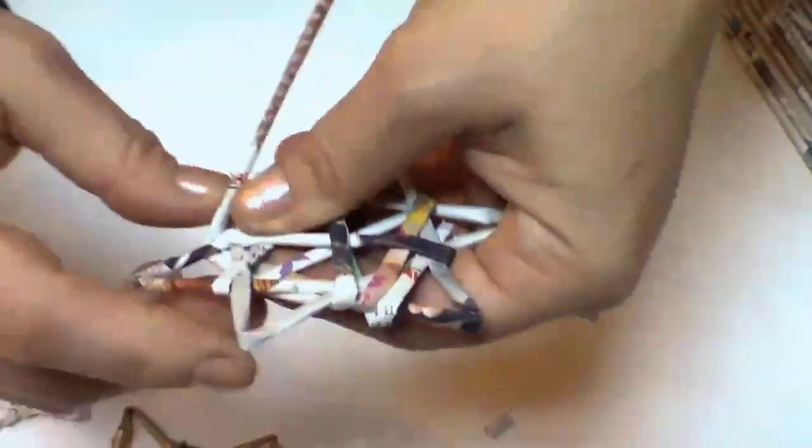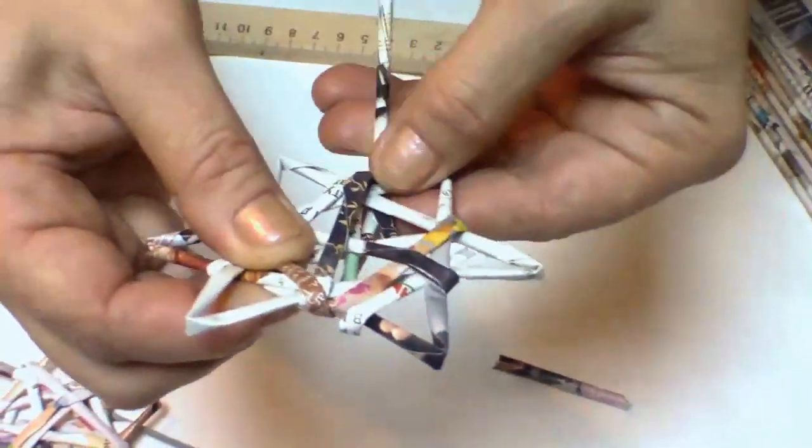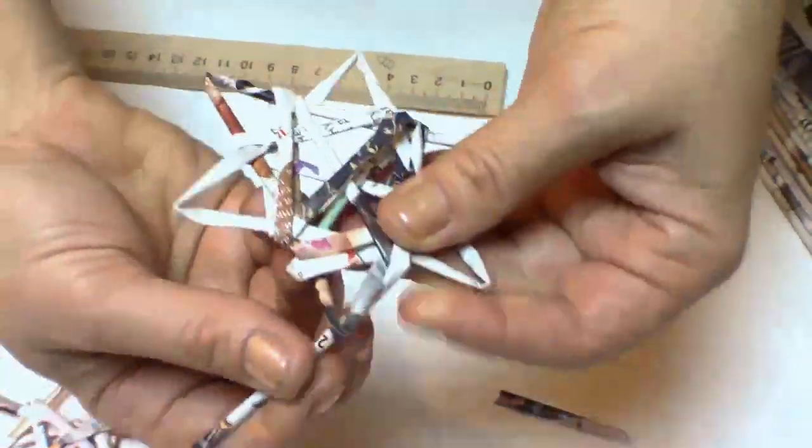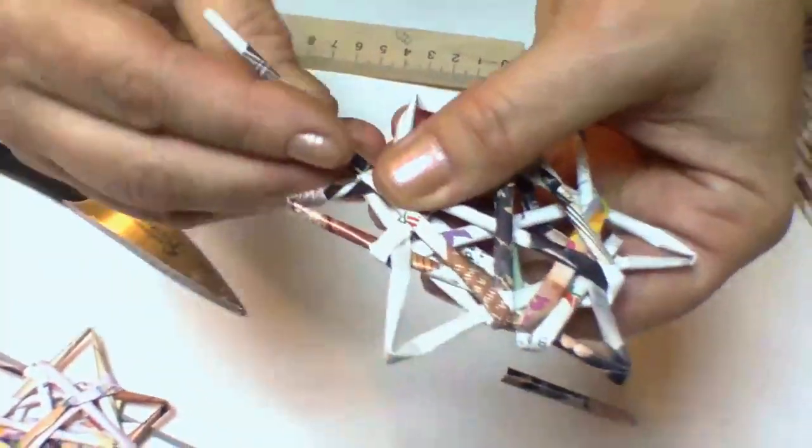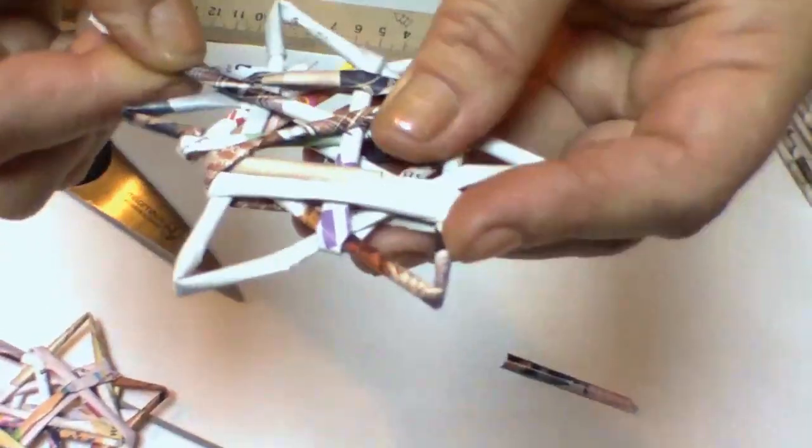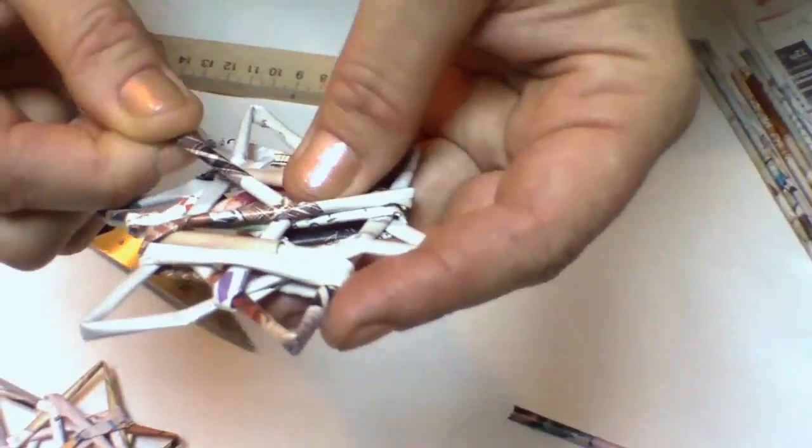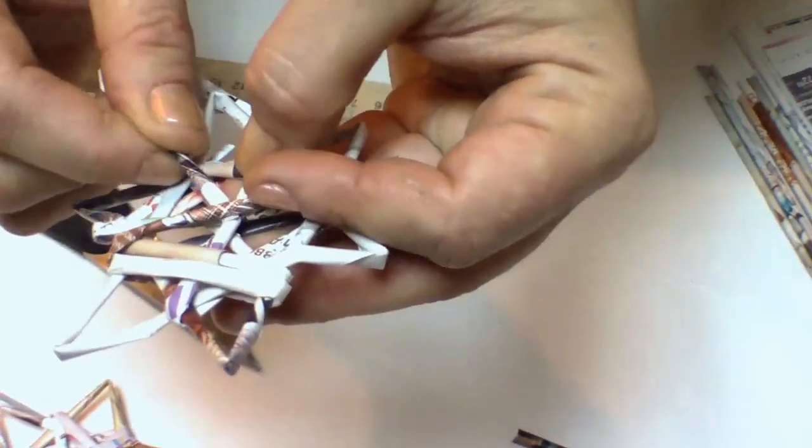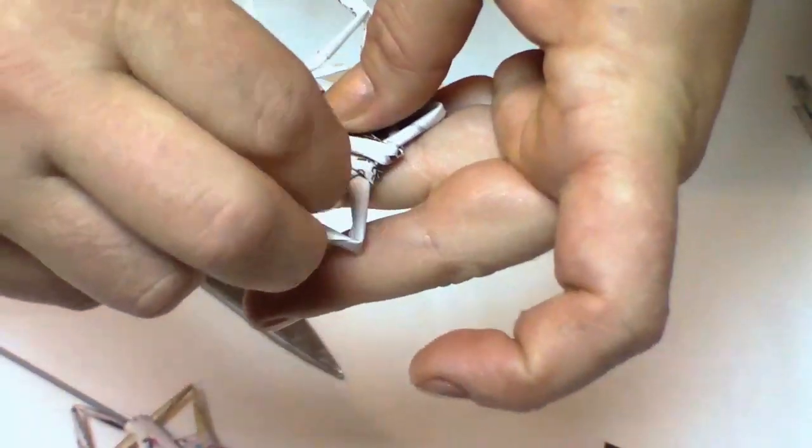At first the snowflake doesn't look very nice because of multicolored pages with letters and figures. Somewhere here we can fix it. Just lead under the coil.